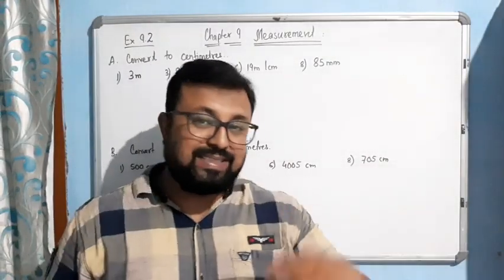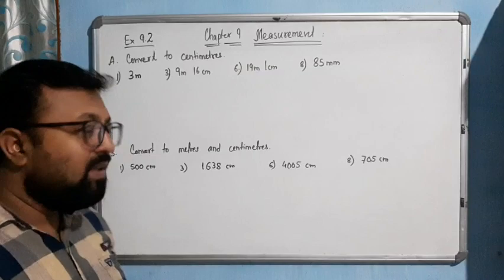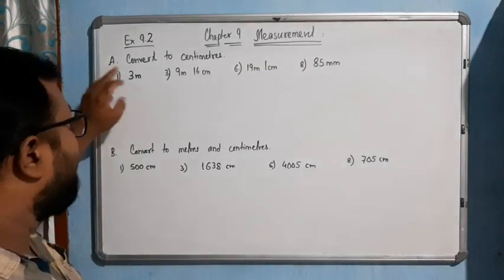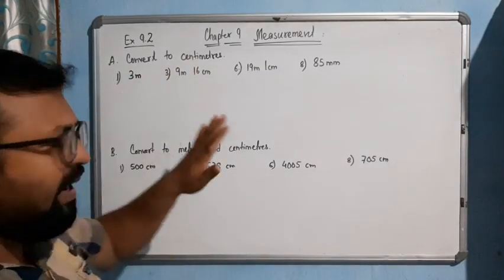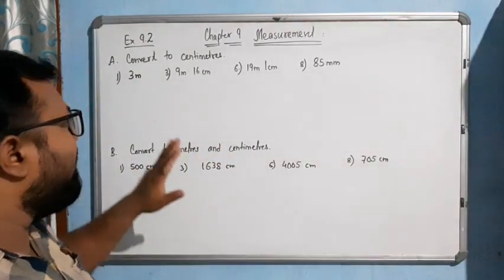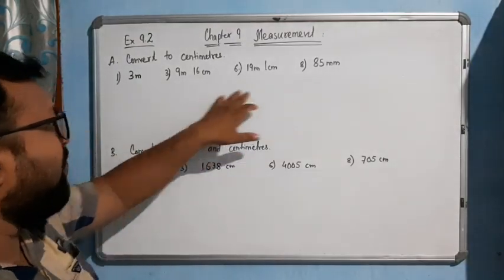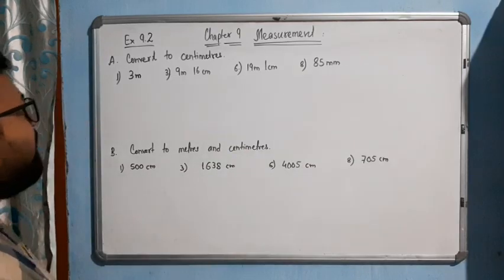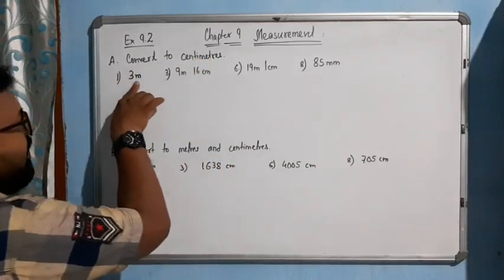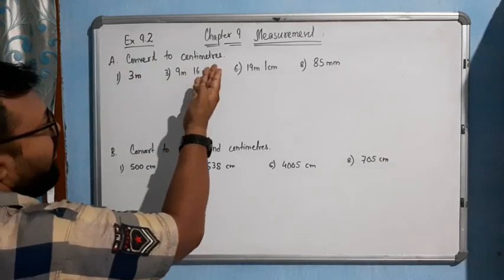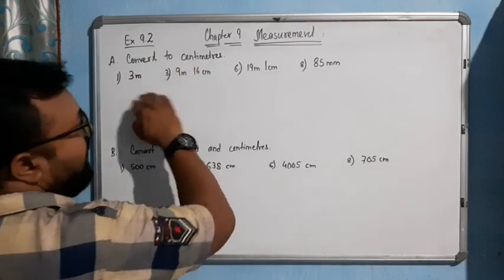Hello students, now come to the next exercise — Exercise 9.2. Here in the first question A, convert to centimeter. There were total eight questions but I have only selected four because the rest are similar. So let me solve these ones. Here meter is given and we have to convert to centimeter; in another, meter and centimeter is given and we again have to convert to centimeter.